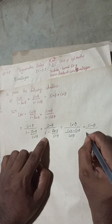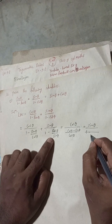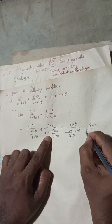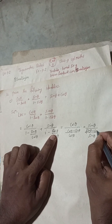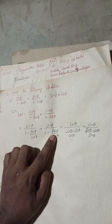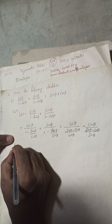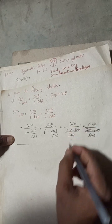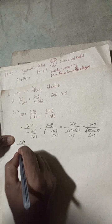cos θ is one, and then sin θ as it is. Then into one, earlier sin θ minus — this is cos squared θ, and down there is cos θ minus sin θ.